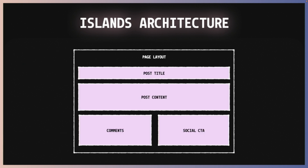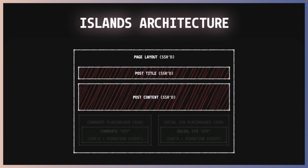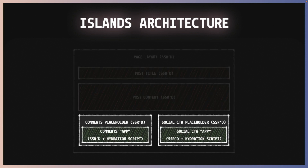It's better if you can visualize that. So here's a simple blog page where we have a layout, then the title of the blog, the content itself, and at the bottom we have some comments and some social buttons for social sharing. If we were to model that with islands, our layout, our title, and the content — because they are static — can be server-side rendered and shipped just as HTML. And then the parts where you need interaction, like the comments and the social buttons, they will have placeholders that are server-side rendered, and inside them you're going to have the hydration scripts for both of them.